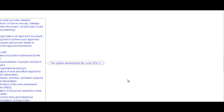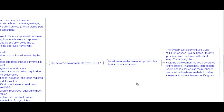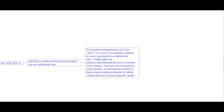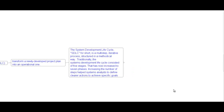System Development Lifecycle (SDLC) transforms a newly developed project plan into an operational one. SDLC is a multi-step iterative process structured in a methodical way. Traditionally, the SDLC consisted of five stages that have now increased to seven phases. The increasing number of steps helps system analysts define clear actions to achieve specific goals. The SDLC stages are: planning, system analysis and requirements, system design, development, integration and testing, implementation, and operation and maintenance.